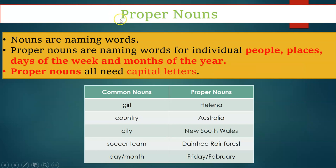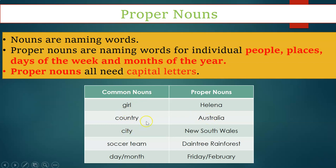Another rule is when writing proper nouns. Nouns are naming words; proper nouns are naming words for individual people, places, days of the week, and months of the year. Proper nouns all need capital letters — they are the exact name. For example, the common noun 'girl' has the proper noun 'Helena'; the common noun 'country' has the proper noun 'Australia'; and for 'city' we have New South Wales or Abu Dhabi.